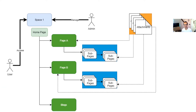Under the home page you can create multiple pages, and under those pages you can create further sub-pages — that is the structure of Confluence. You have a space with at least one page called the home page, and beneath that page you have multiple sub-pages. In Confluence there are basically two types of users.